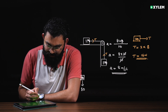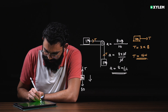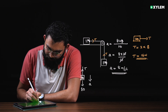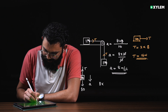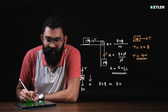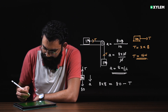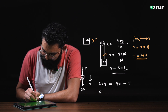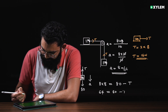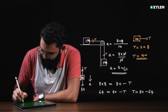Verifying with the 8 kg block: weight is 8 into 10g equals 80. Net force equals 80 minus tension equals 8 times 8 equals 64. So tension equals 80 minus 64, which also gives 16 N, confirming the answer.